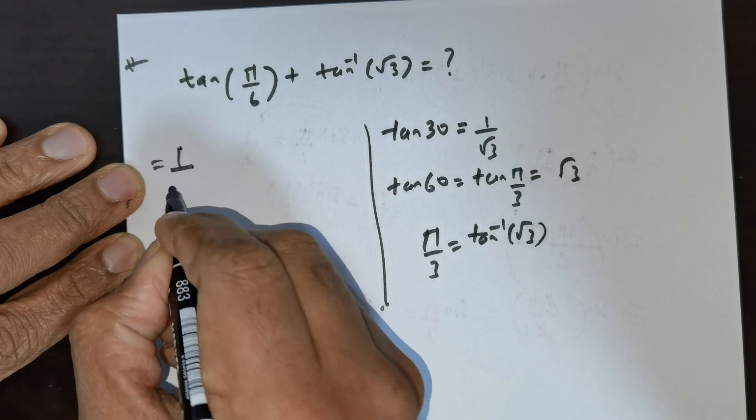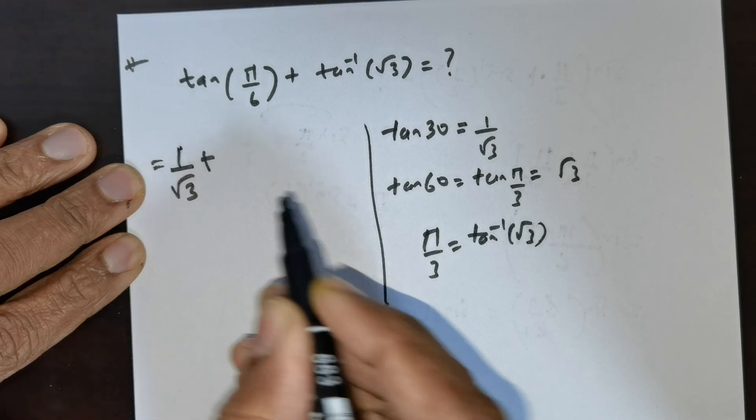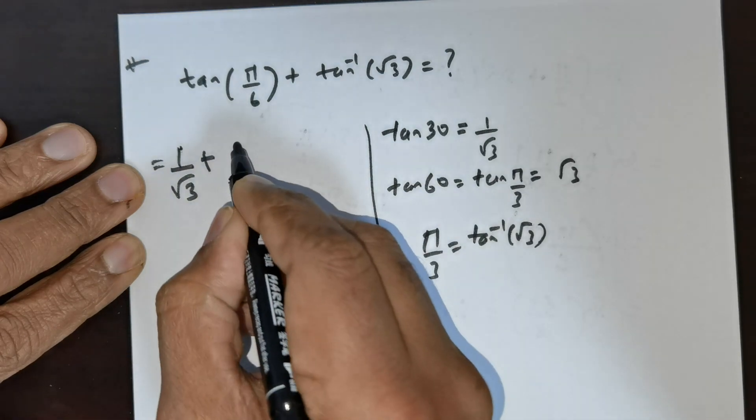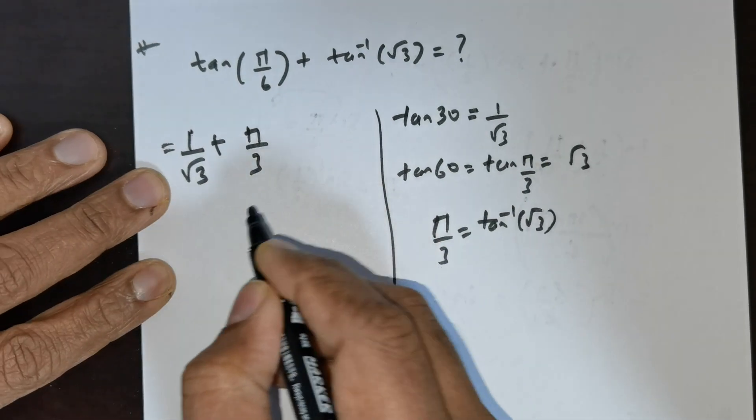Now I can just substitute that to be as root 3. For this tan inverse of root 3, that's going to be pi divided by 3. Now how are you going to do this?